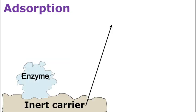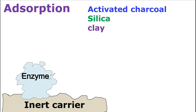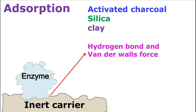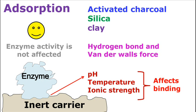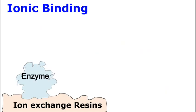Carriers used in adsorption include activated charcoal, silica, or clay. The adsorption involves weak attractive forces such as hydrogen bonding and van der Waals interactions. Because of these weak attractive forces, the enzyme activity is not affected. However, changing pH, ionic strength, and temperature can affect enzyme binding.